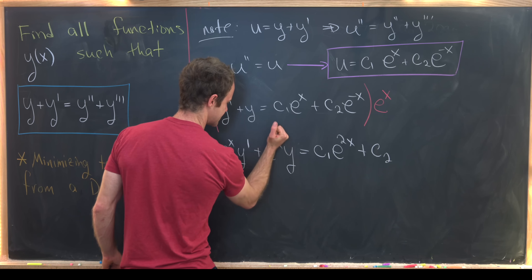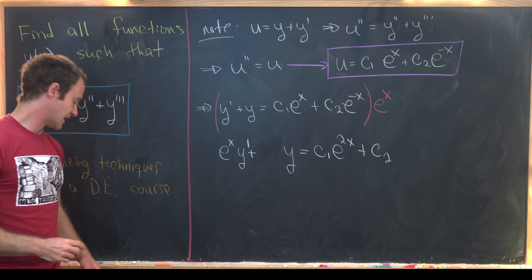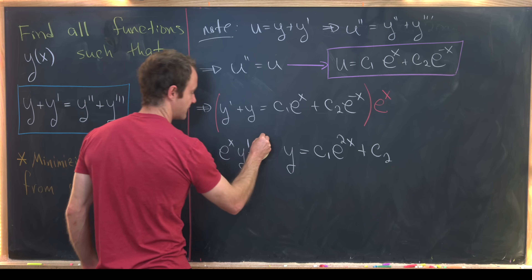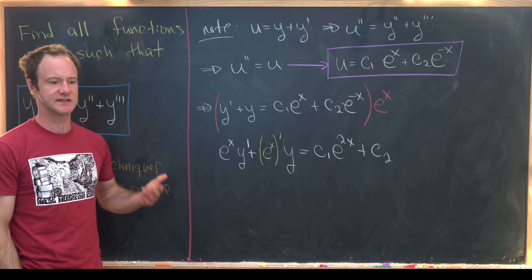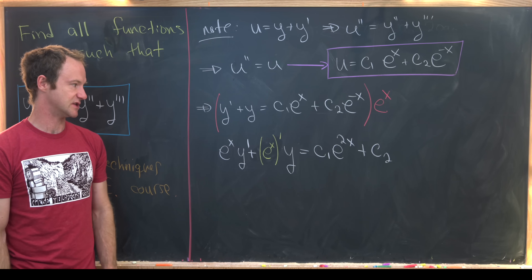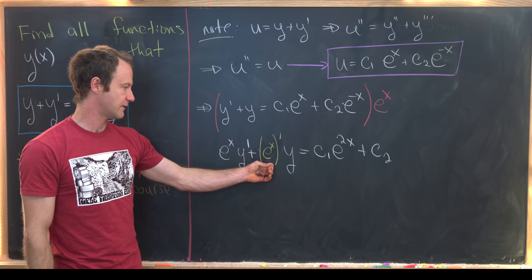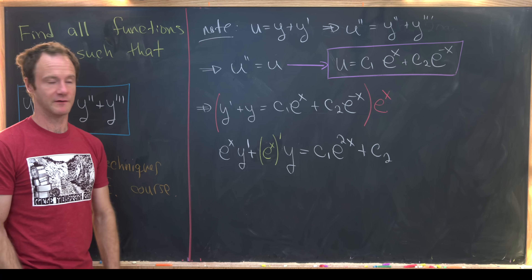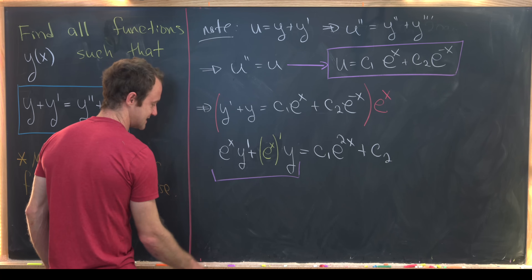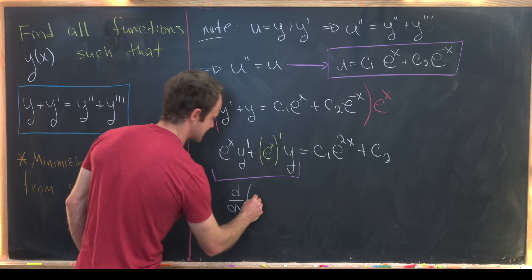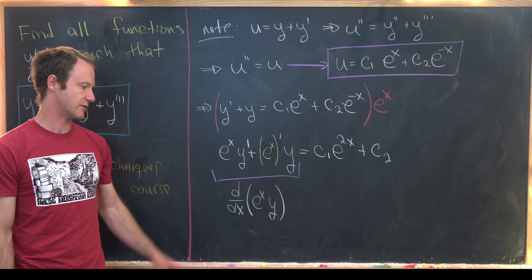I'm going to replace the e to the x multiplying y with the derivative of e to the x — which is the same thing, so nothing changes. But now look at what we have: a function times the derivative of another function, plus the derivative of the first function times the second function. That's exactly the setup for the product rule. So this is exactly the derivative with respect to x of e to the x times y — which by the product rule takes us back to what we had above.